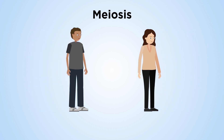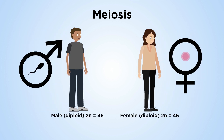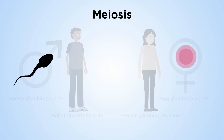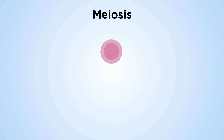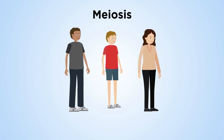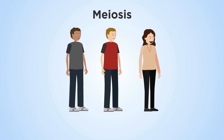Meiosis is a central event in the lives of most eukaryotes, including humans. Gametes are produced with half the number of chromosomes of their parent cells. This allows them to fuse and form a genetically unique diploid embryo that grows into an adult.